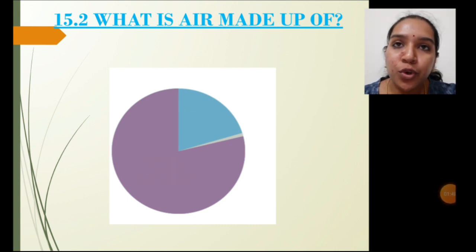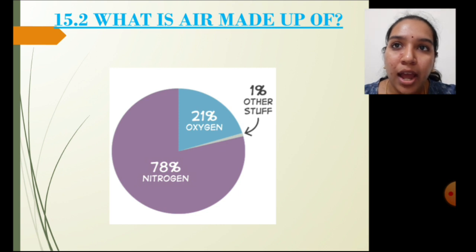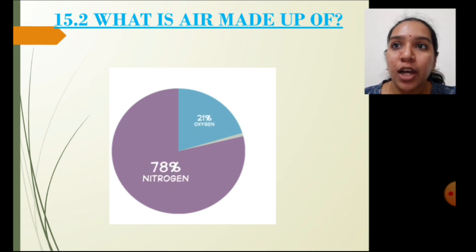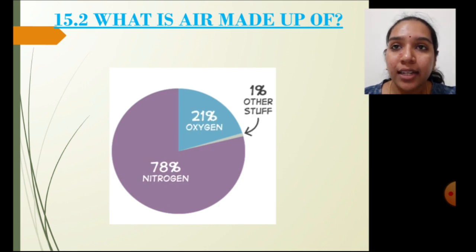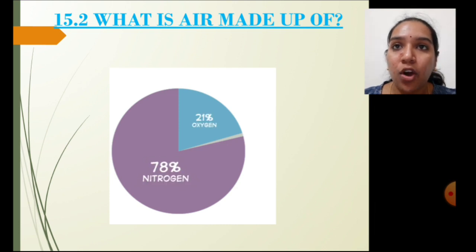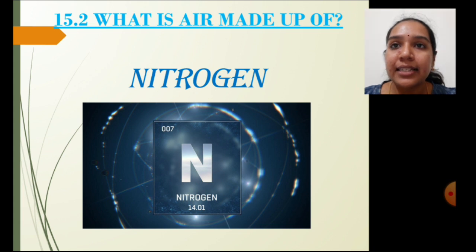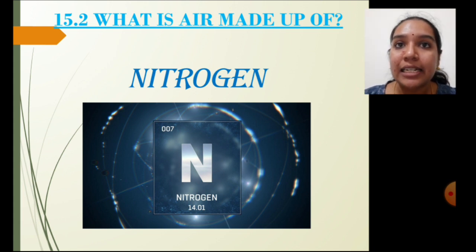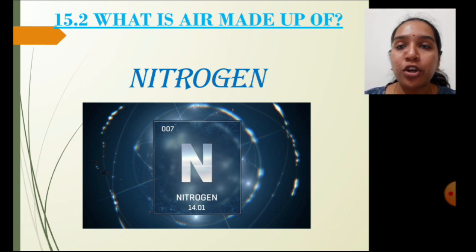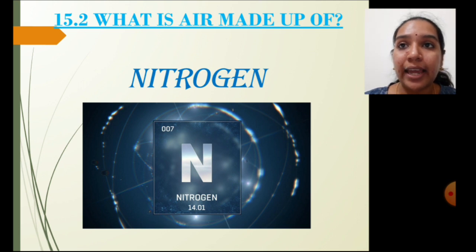Do you know what air is made up of and what are the other components present in air? By seeing this picture, you can clearly understand. Let's explore the other components present in air along with water vapor and oxygen. The next component is nitrogen. Most of the air's composition is covered by nitrogen gas — it is around 78 percent of the total air composition.